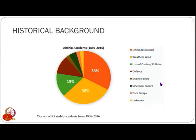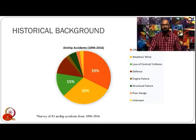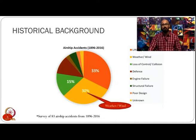Let us look at some historical background on all the airship disasters or accidents that have happened from 1896 to 2016. The major chunk is related to lifting gas, at 33 percent. Most of those accidents happened before the 1950s, because after that several restrictions on lifting gas were introduced and safety precautions were taken even when hydrogen was used. Something that has persisted for a long time is weather or wind related accidents, contributing about 30 percent of total airship accidents since 1896 to 2016, suggesting that airships are susceptible to bad weather and windy conditions.